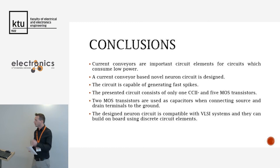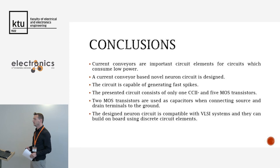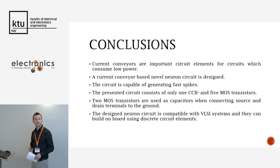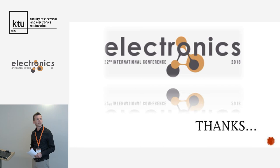In conclusion: a negative type second generation current conveyor based neuron circuit is designed. The circuit is capable of generating phase spiking behavior and consists of only MOS transistors without any passive elements. Two MOS transistors are used as capacitors, so this circuit is compatible with VLSI systems. Thank you for your attention.